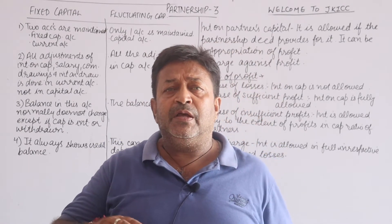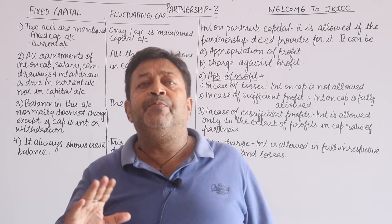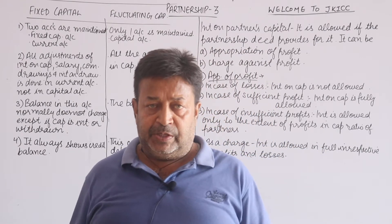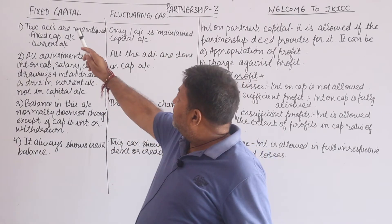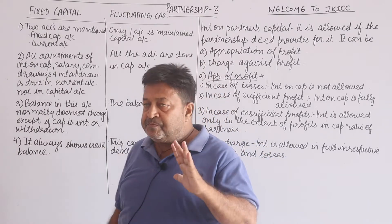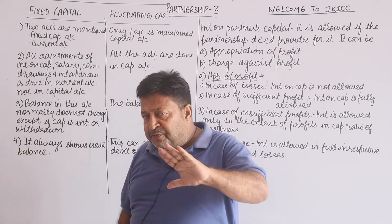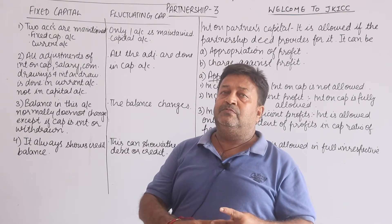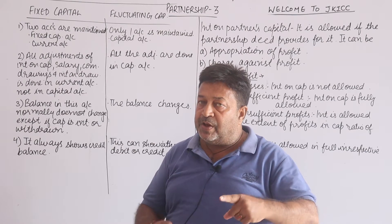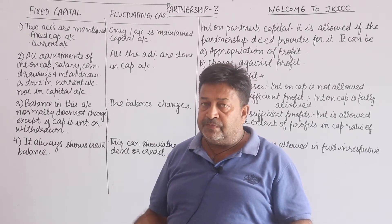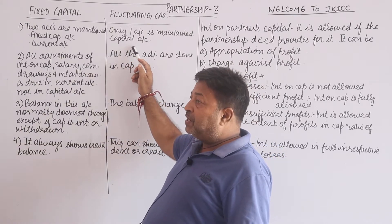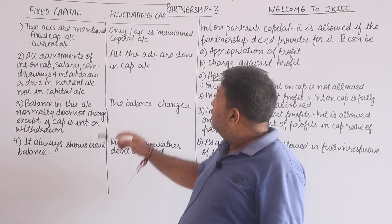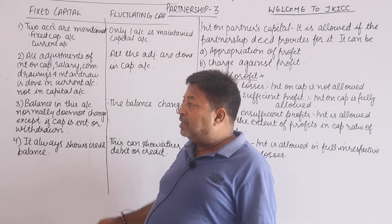We talked about the fixed capital and fluctuating capital. What are the differences? In case of fixed capital, we have to maintain two accounts: one capital account and one current account. If the capital is fluctuating, then only one account is prepared — that is the capital account.